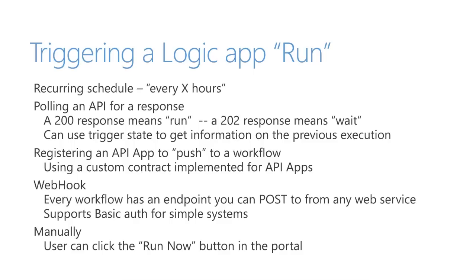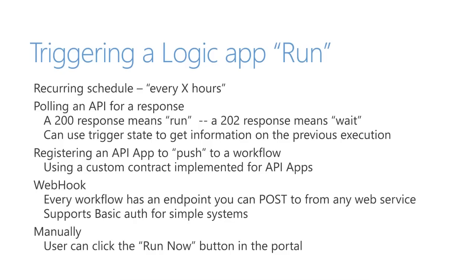This demo had a different type of trigger. We support four different types of triggering today. The simplest is a recurring trigger — every X amount of time. The second is we can poll an endpoint for a response. The way that works: we call into the connector and it returns either a 200 OK with content, in which case we execute the workflow, or a 202 HTTP Accepted, in which case we wait and don't start the workflow. This is how a connector signals whether it has content to pass into the workflow.